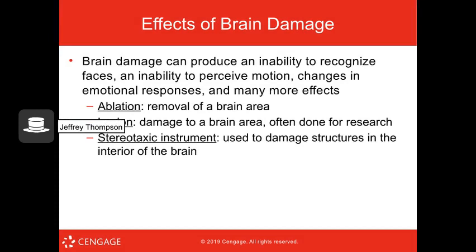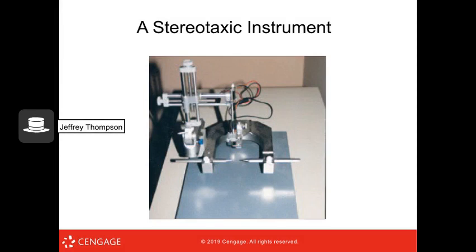Brain damage can cause many different issues depending on the area damaged — from inability to recognize faces, to inability to perceive motion, to changes in emotional responses. Types of damage studied include ablations (removal of a brain area), lesions (damage to a brain area, often done for research), and stereotactic instruments that specifically damage structures in the interior of the brain.